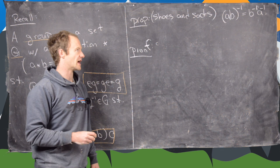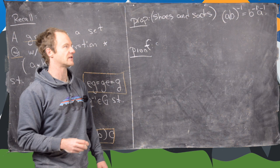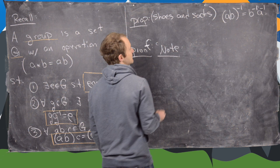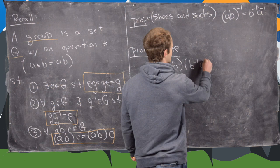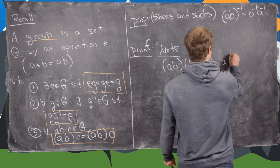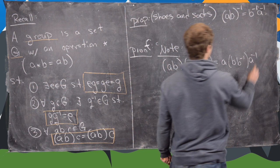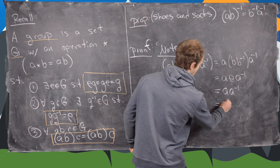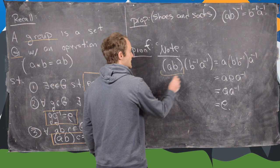So this says that AB quantity inverse is the same thing as B inverse A inverse. Remember now in general we don't have commutativity so we have to worry about the order. So if we take AB times B inverse A inverse and reassociate this we're going to get ABB inverse A inverse. So that's what we get by reassociating but these two cancel to the identity giving us AE A inverse but that gives us AA inverse but that gives us the identity.